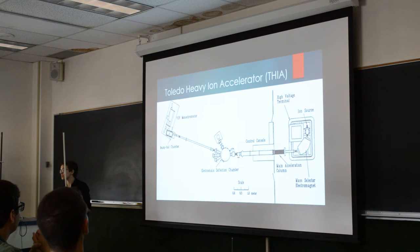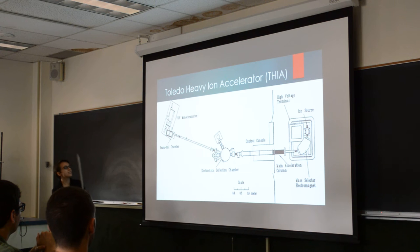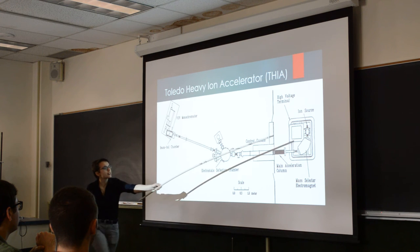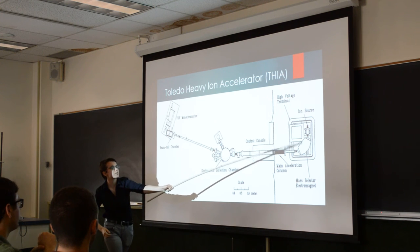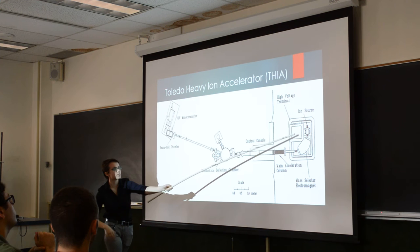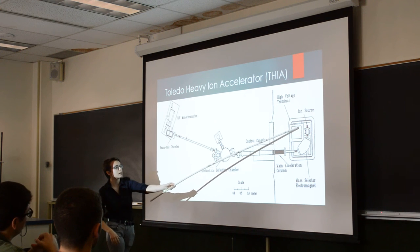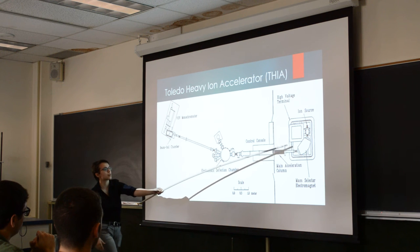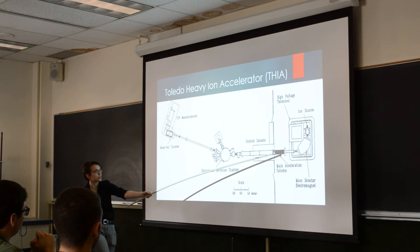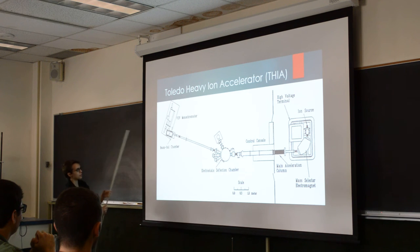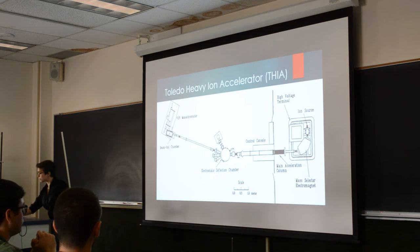This is the Toledo Heavy-Ion Accelerator, also known as THEA. It's a very large accelerator — well, not compared to some accelerators, but it's about 10 meters long. Over here in the ion source is where there's an argon plasma, which ionizes whatever the precursor is — lead or tin in our case. It goes through the mass spectrometer, which selects the isotope we're looking at, and then down through the deflection chamber and into the beamfoil chamber, which is where the magic happens.